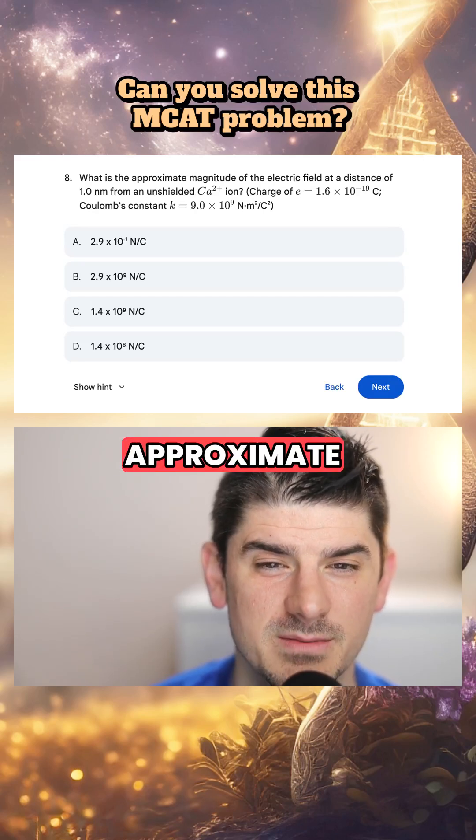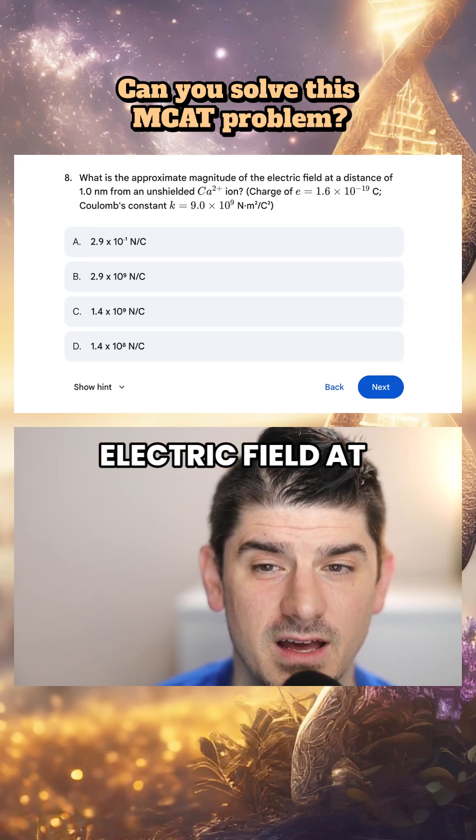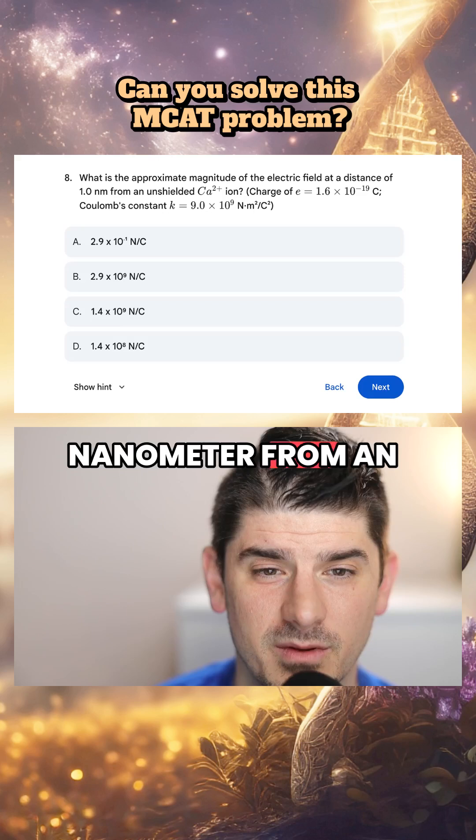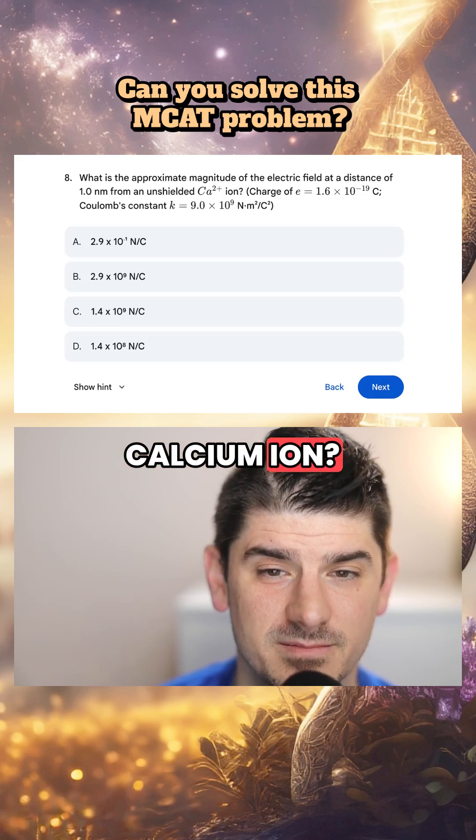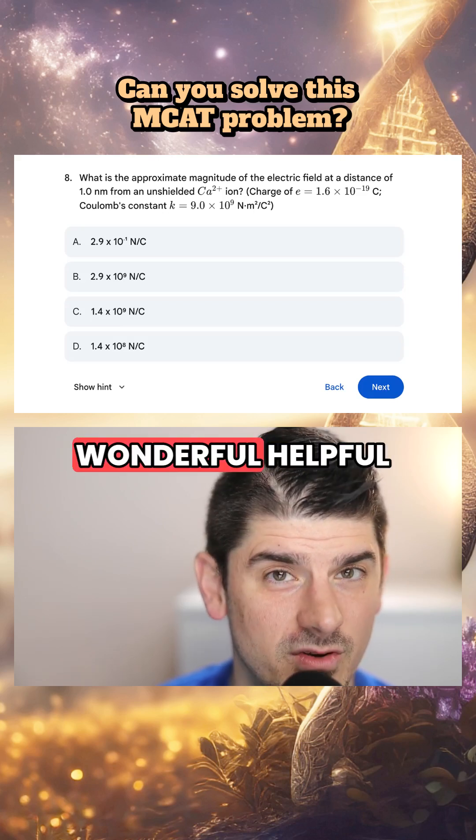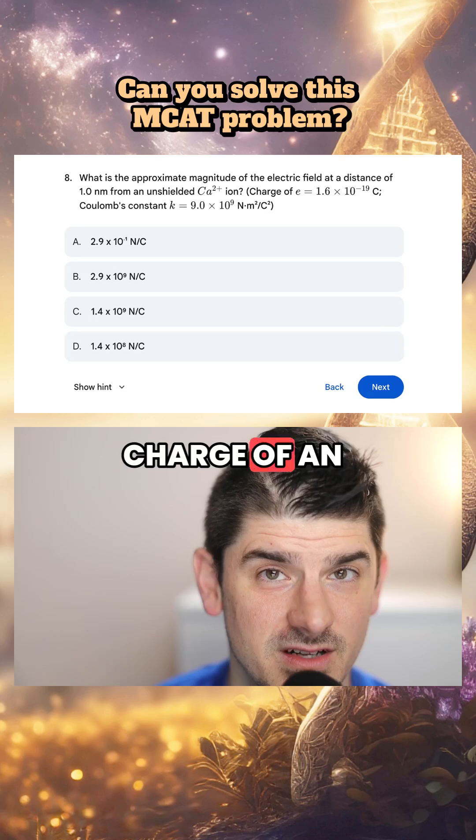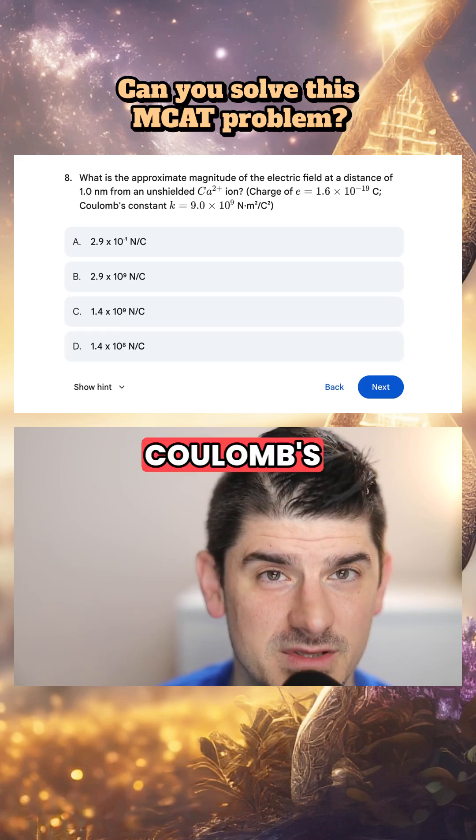Let's do an MCAT problem. What is the approximate magnitude of the electric field at a distance of one nanometer from an unshielded calcium ion? We've got some wonderful helpful numbers here, including the charge of an electron and Coulomb's constant.